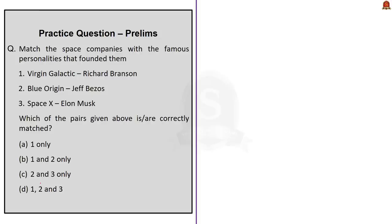The fourth question gives three private space companies and asks us to match them with their respective founders. Virgin Galactic was founded by Richard Branson — correctly matched. Blue Origin was founded by Jeff Bezos, the founder of Amazon — also correctly matched. SpaceX was founded by Elon Musk — also correct. So the correct answer is option D, 1, 2, and 3. Falcon 9 is the launch vehicle for SpaceX, and Blue Origin's launch vehicle is named New Shepard 3 — a vertical takeoff, vertical landing crew-rated suborbital launch vehicle.